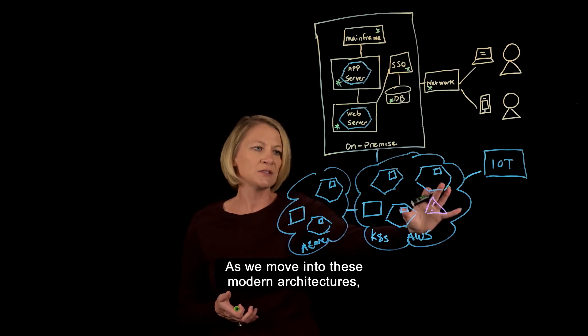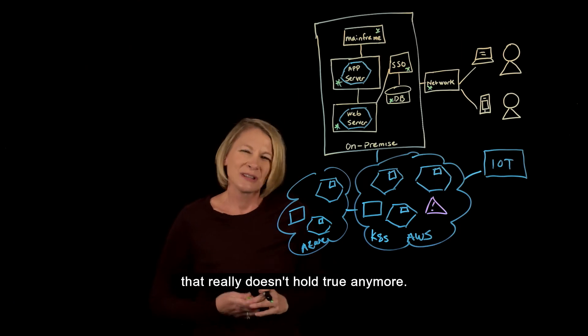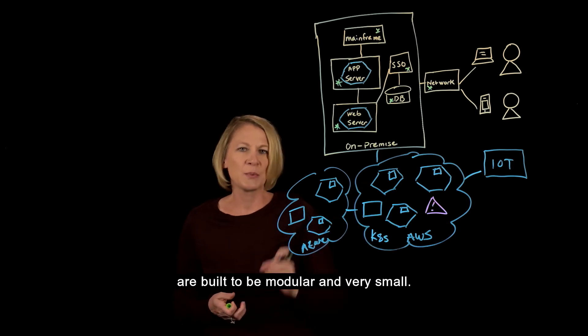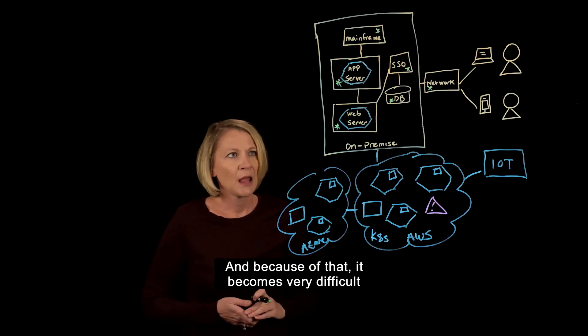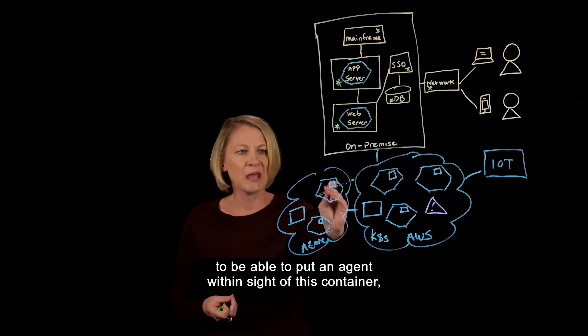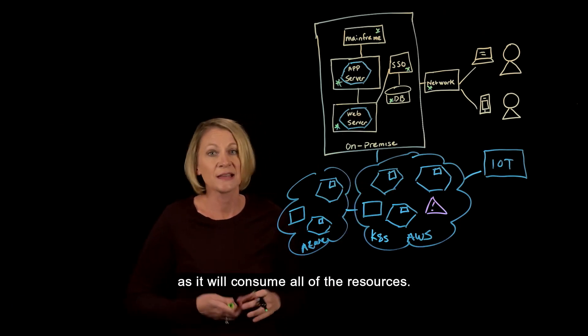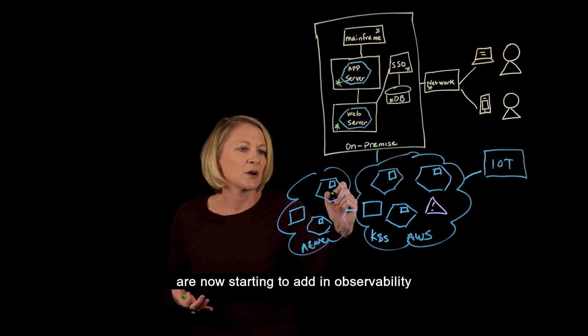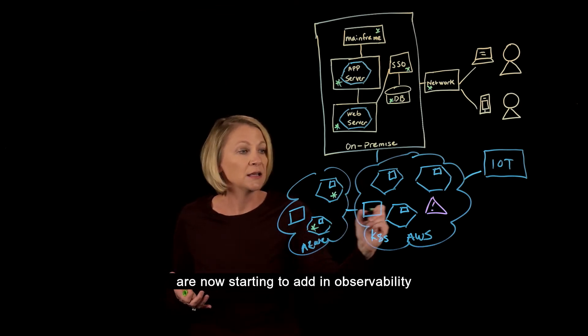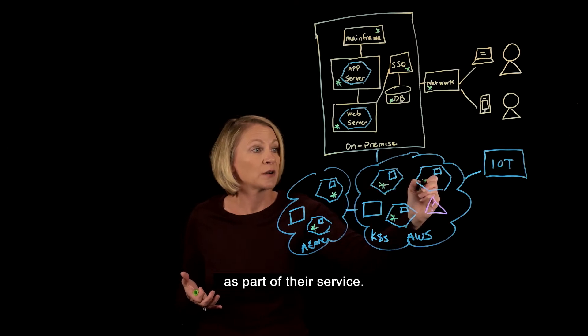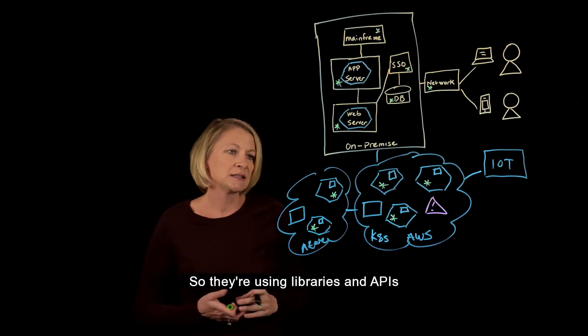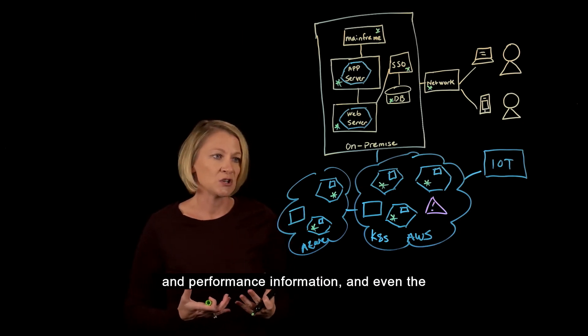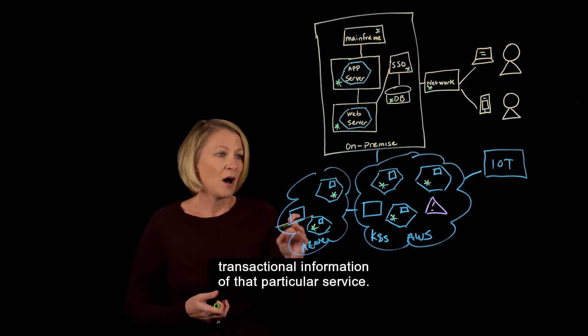As we move into these modern architectures, that really doesn't hold true anymore. The reason is because these microservices are built to be modular and very small, and because of that it becomes very difficult to put an agent inside this container as it will consume all of the resources. So what we see is that developers are now starting to add in observability as part of their service, using libraries and APIs to push out the health and performance information and even the transactional information of that particular service.